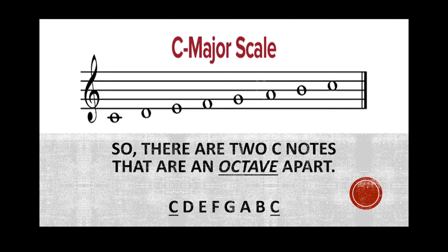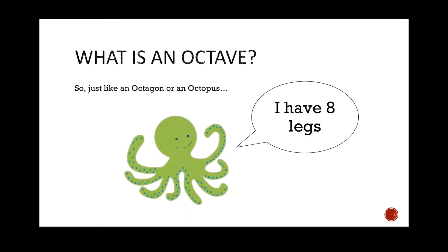You will have noticed that there are two C notes in the C major scale that are an octave apart. So the order of the notes is C, D, E, F, G, A, B, and then we have another C. So the question you might be asking yourself is: what is an octave?